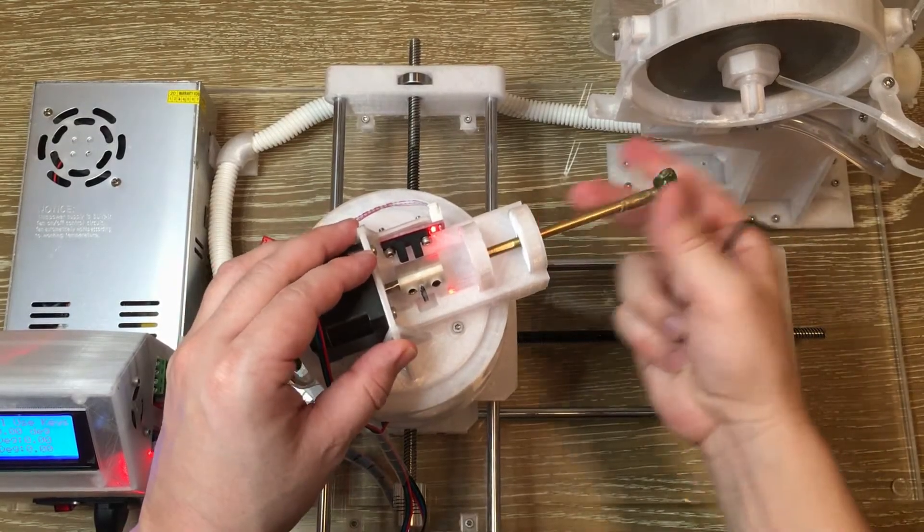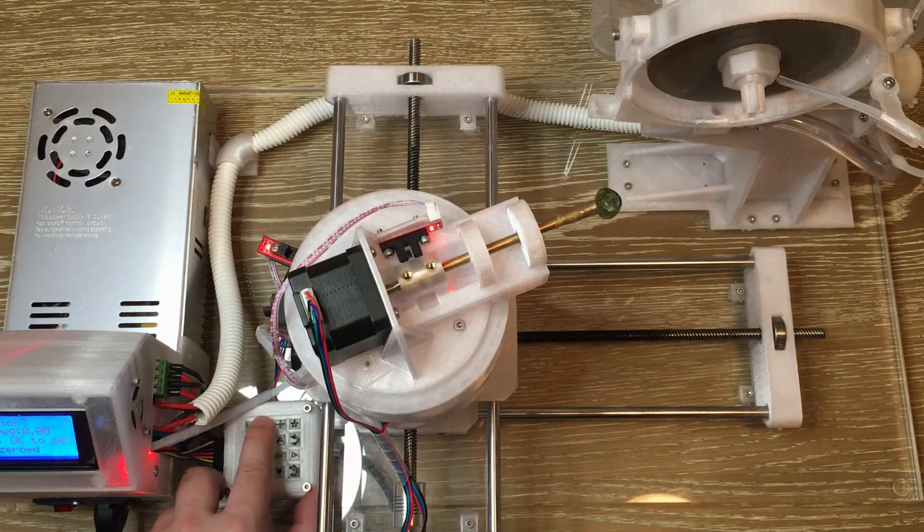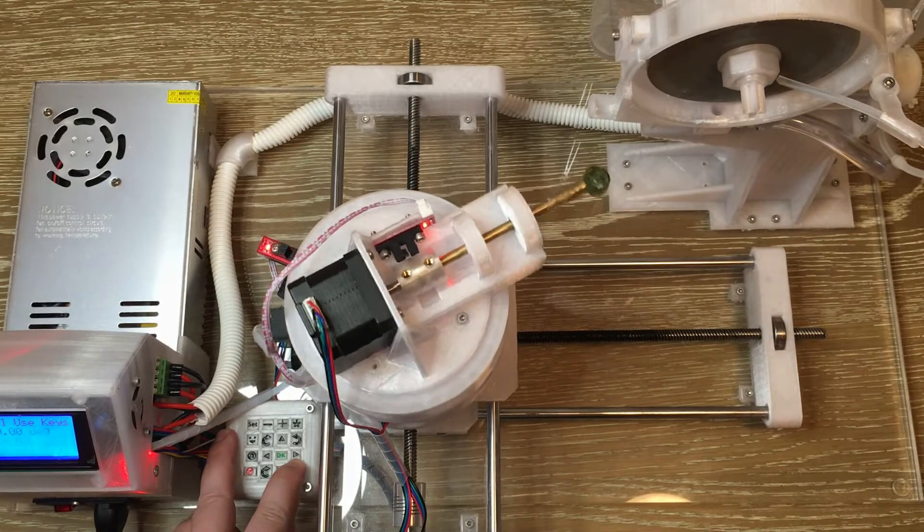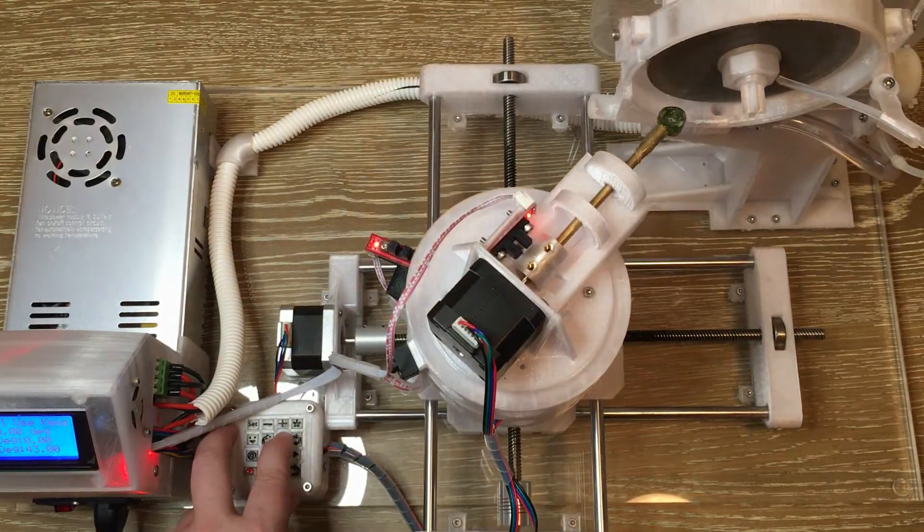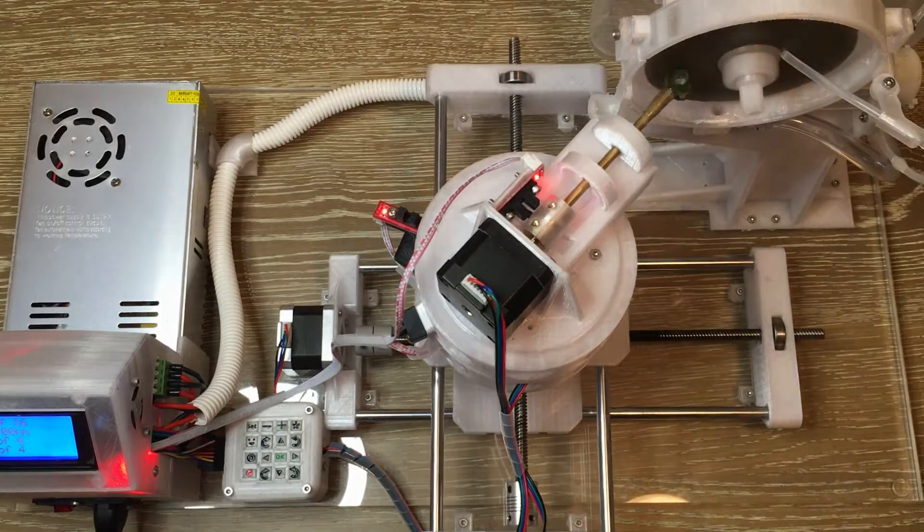The Gem Creator is easy to use and saves you time. Simply insert your DOP with attached stone, auto-zero the index, auto-zero the DOP angle, set the angle you want to use using the keypad, move the stone to the lap using the keypad, set how many facets you want to cut and press go. The Gem Creator will automatically grind or polish these facets.